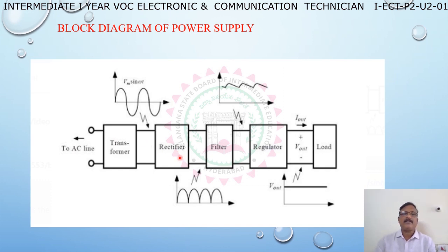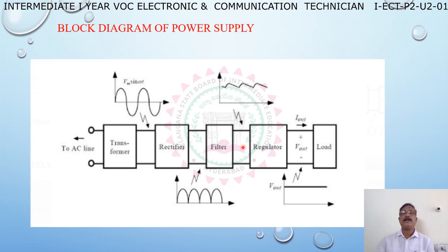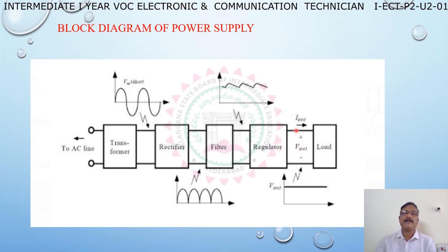The output of the transformer is given to the rectifier. This rectifier converts alternating current into direct current. The output of the rectifier will be DC, but it contains some AC component or ripples. To filter out those ripples, we use a filter. The output of the filter may still contain some fluctuations, which should not be directly given to electronic appliances. So we use a regulator to make those fluctuations steady, giving a constant direct current to the electronic appliance.